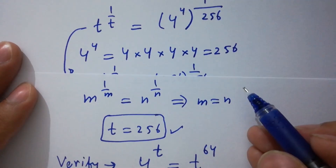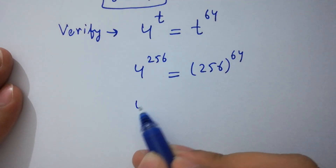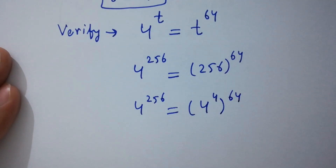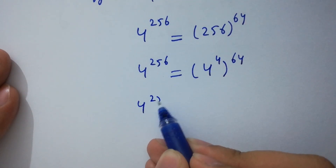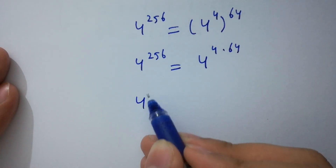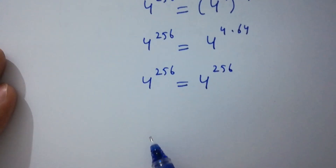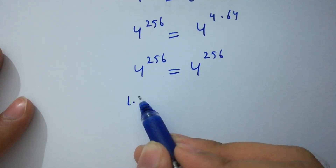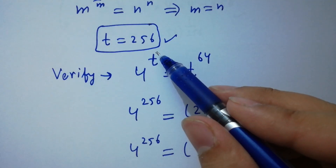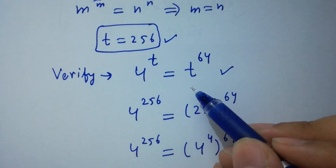To verify: substituting t equals 256, we check that 4 to the power 256 equals 256 to the power 64. Since 256 equals 4 to the power 4, the right-hand side becomes 4 to the power 4 times 64 equals 4 to the power 256. You can see here base and powers are the same — left hand side equals right hand side, which shows that t equals 256 satisfies the equation 4 to the power t equals t to the power 64.